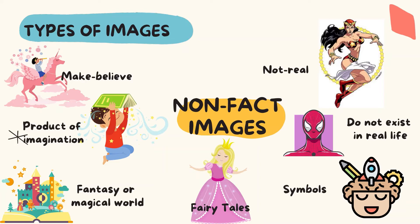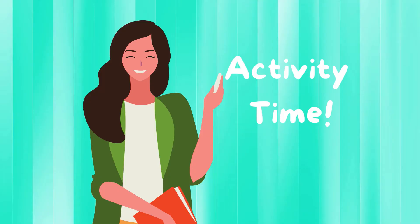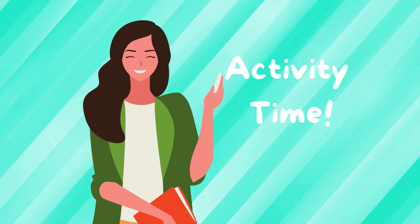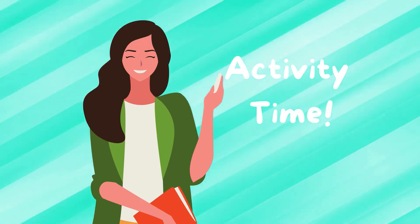The second type is non-fact images. Make-believe images like riding on a unicorn, and not-real objects like Tarzan and Spider-Man, do not exist in real life. We also have symbols in our mind — our own images — fairy tales from books, the fantasy or magical world, and any product of imagination.